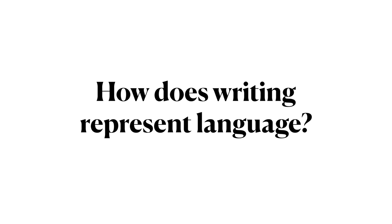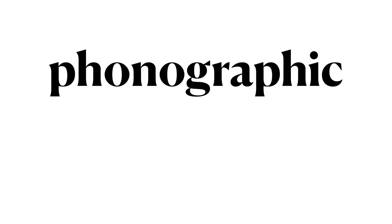We've established that writing is a technology, so what are the means that that technology uses in the languages of the world to represent language? There are three important principles that we're going to examine. One is phonographic. A phonographic writing system is one in which the symbols represent sound. The way this happens can vary — in some systems only consonants might be encoded, in others consonants and vowels, in others syllables.